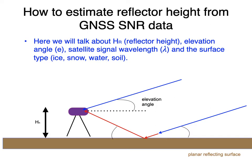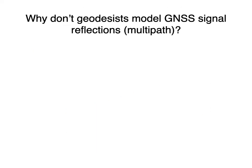As shown in the cartoon, the reflected signal travels an additional distance shown in red, and it interferes with the blue direct signal. That interference pattern is what we use in GNSS IR. So let me give some background on where this is coming from. If signal reflections or multipath is a significant error source, why don't geodesists model it and remove it?